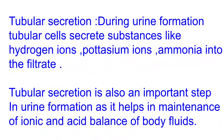During tubular secretion, tubular cells of the kidney secrete substances like hydrogen ions, potassium ions and ammonia into the filtrate, concentrating it. This step helps in maintenance of ionic and acid balance of body fluids. To produce hypertonic urine, ions are secreted into the filtrate in the distal convoluted tubule (DCT).